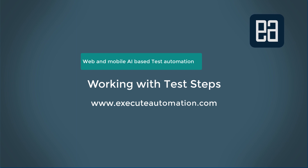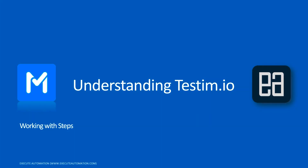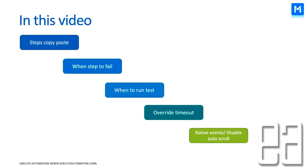Hi guys, my name is Karthik and I am from azureautomation.com. Welcome to our next video on understanding Testim cores. In this video I'll be talking about working with steps — specifically step copy paste, when a step should fail, when a test should run, overriding timeouts, native events, and disabling auto scroll options. These are some of the steps which are pretty important when working with Testim, because Testim steps are the heart and soul of the test we are executing.